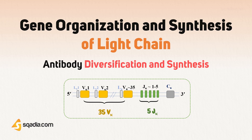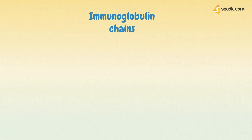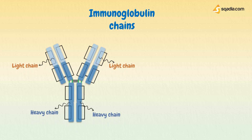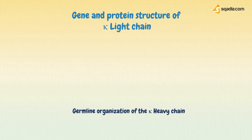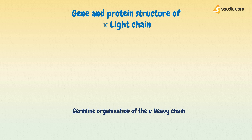This section will focus on gene organization, recombinations, and ultimately synthesis of light chains of immunoglobulin. We know that a molecule of antibody is composed of two identical heavy chains and two identical light chains. This light chain can be any one of two types: kappa light chain and lambda light chain. Both these chains are structurally and functionally similar, but differ only in the gene segments coding for these chains.